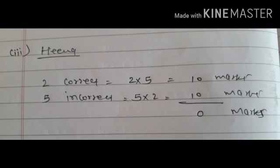Third one: Hina gets 2 correct and 5 incorrect answers out of 7 questions she attempts. What is her score? Hina's score is 0 marks. Dear students, just understand the question and you can give the answer easily.